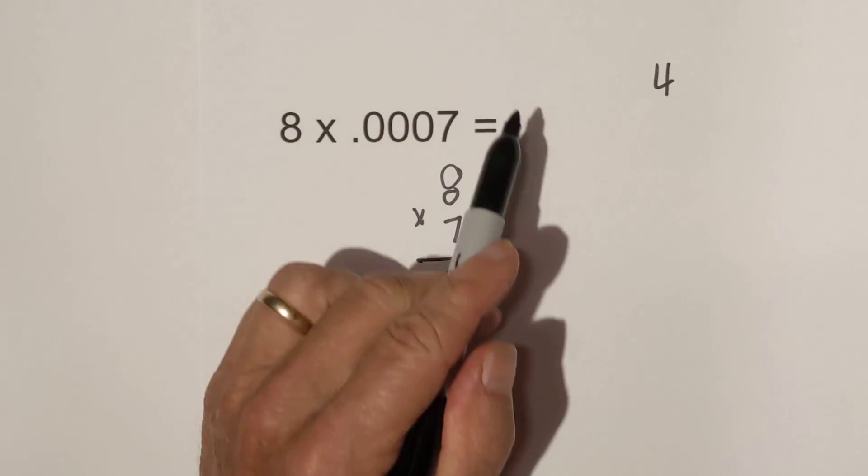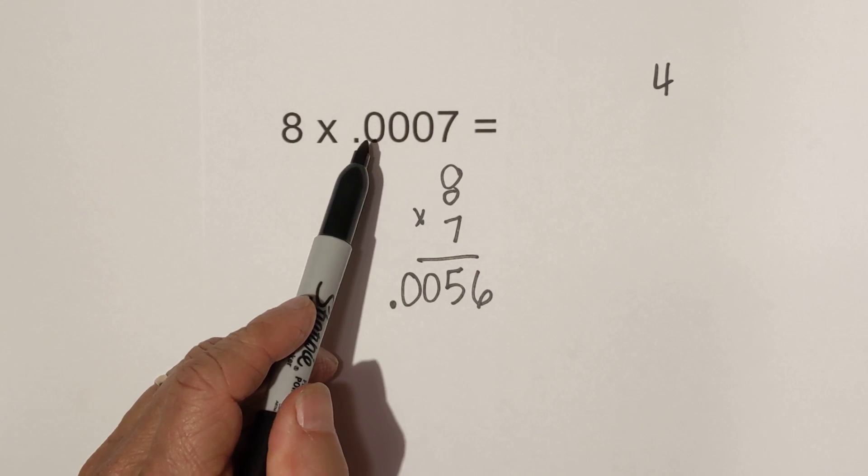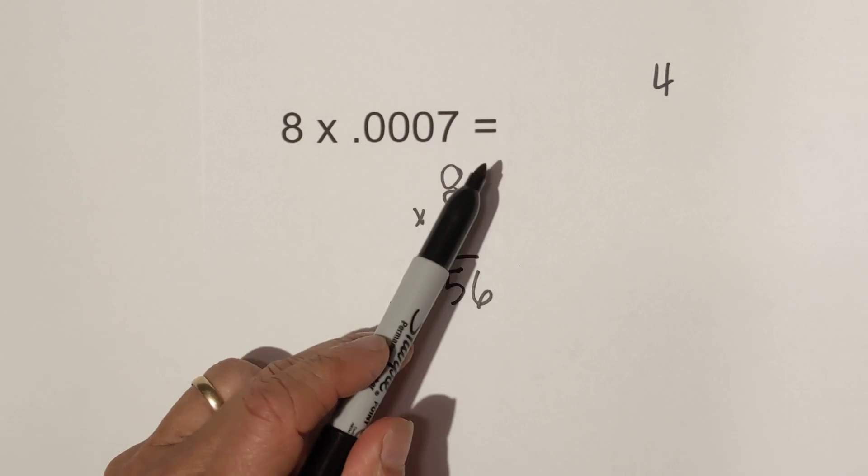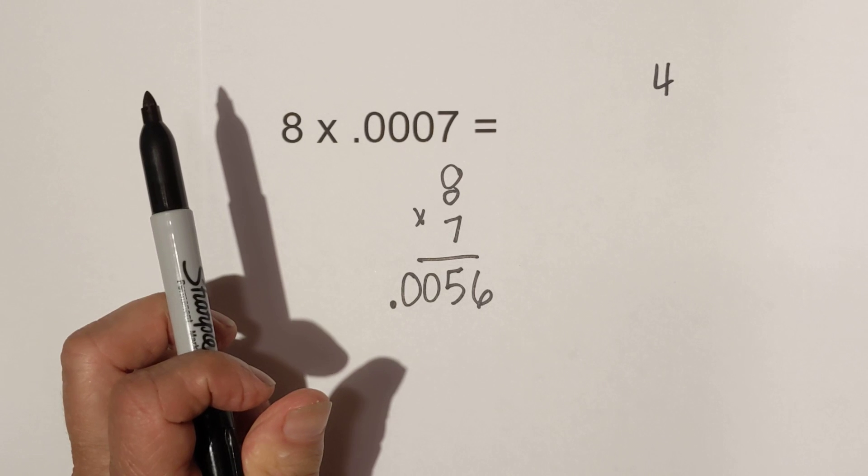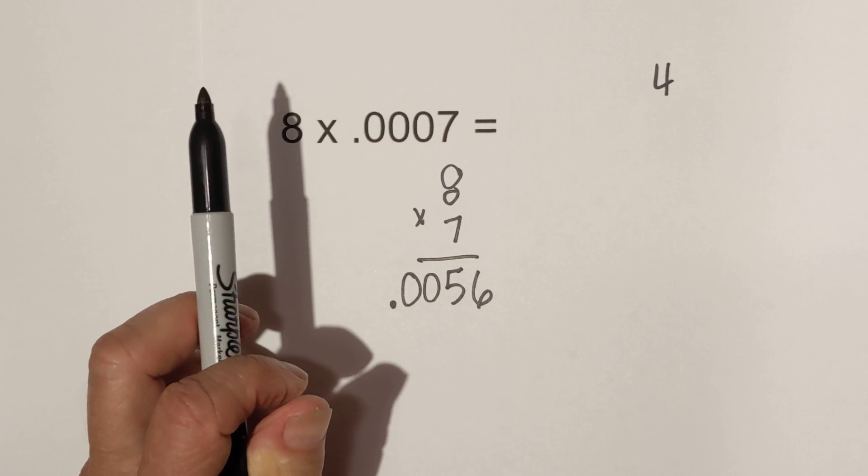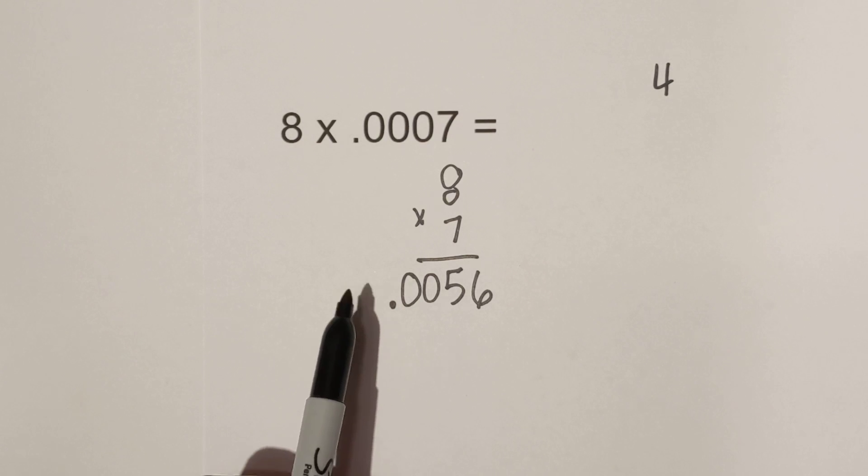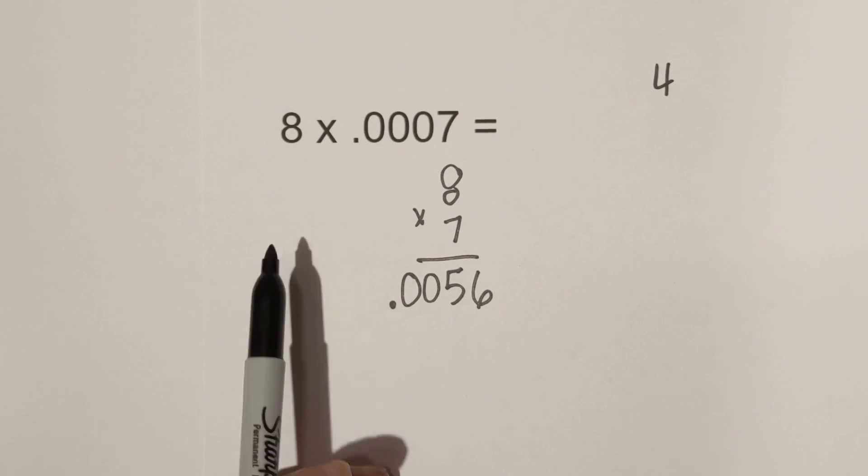so in summary, let's go back to this problem. Step one is you count how many numbers are to the right of the decimals. And then you multiply as if there are no decimals. And then once you get that answer you just go back and make sure you have the same number that you counted originally to the right of the decimal point.